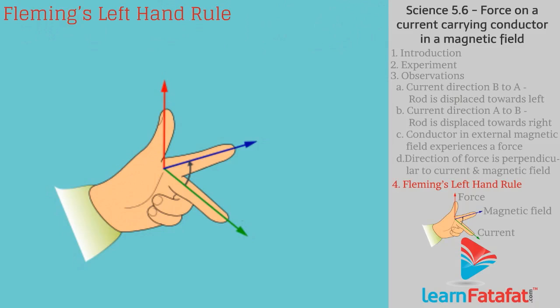Fleming's Left Hand Rule states that stretch the forefinger, middle finger, and thumb such that they are mutually perpendicular to each other.